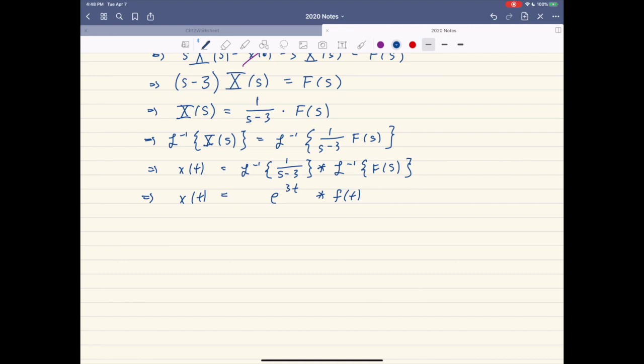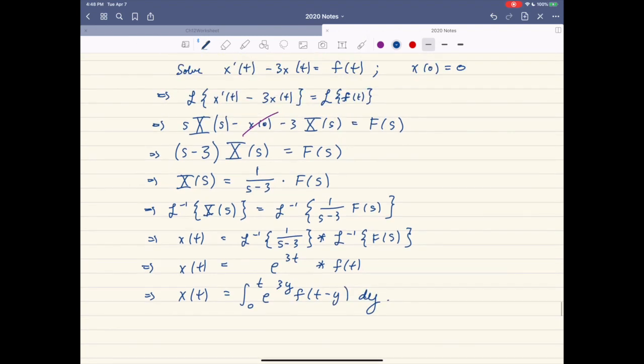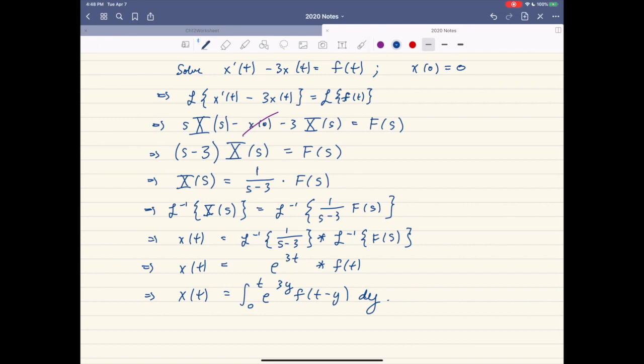And our final step is I want to actually write out this convolution as an integral. So x of t, we can write as, if this is a convolution, this is going to be the integral from 0 to t, e to the 3y, f of t minus y, dy. And what we've done is we've taken and solved our differential equation. So I think this is pretty cool, actually. But we've taken and solved our differential equation here.